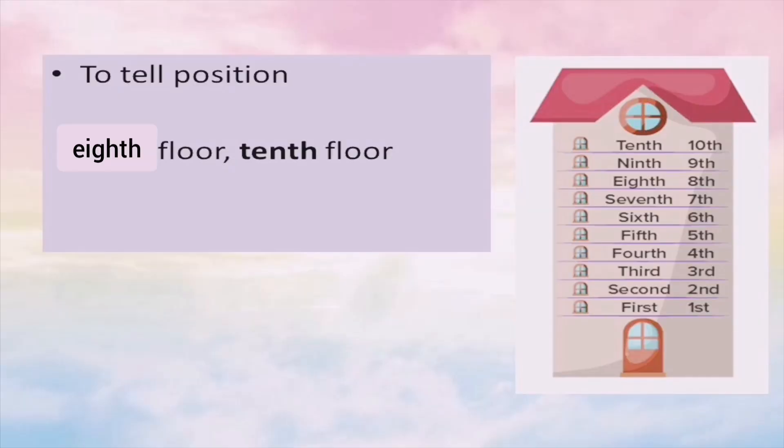You can either write it in full — spell it out as F-I-R-S-T — or you can use a contraction: put the number and then the suffix in a smaller part. For example, number one with ST becomes '1st,' number two with ND becomes '2nd,' three with RD becomes '3rd,' and four with TH becomes '4th,' and so on.